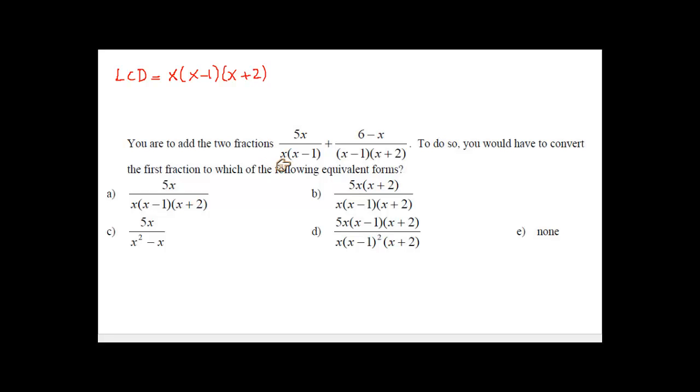Between x and x minus 1, you have x minus 1 appears one time here, so that would be part of the LCD. x plus 2 would be part of the LCD, and so is x. So, the product of these three terms would be your LCD.